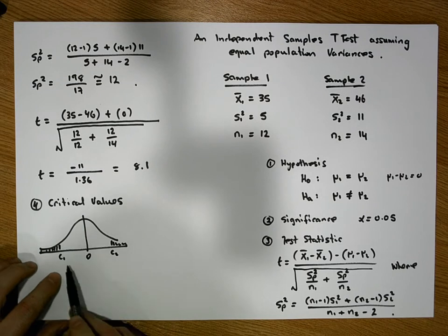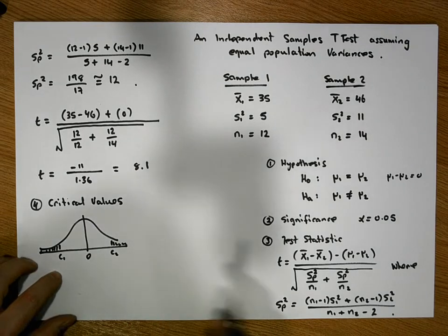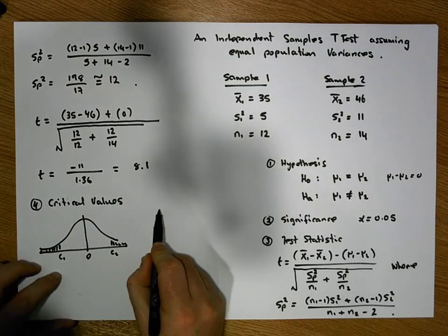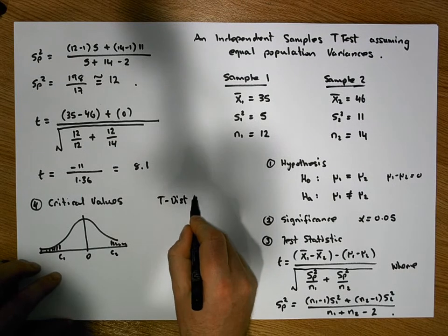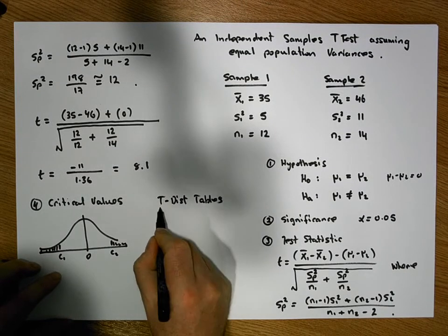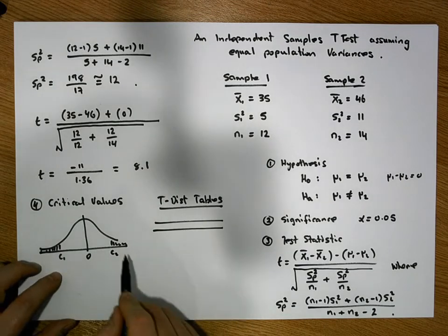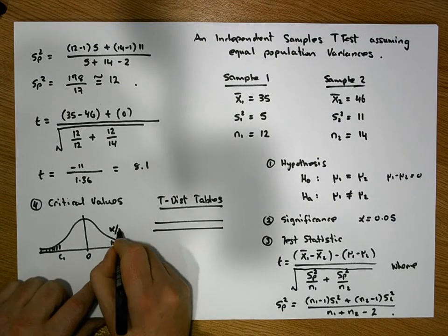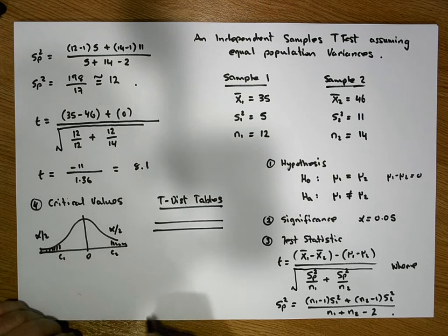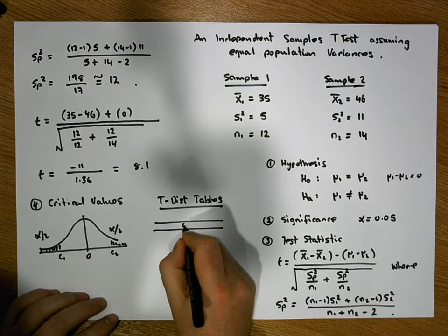So to figure out these particular critical values, what we need to do is we need to go to our t-distribution tables. The degrees of freedom, in this case, our t-distribution tables are going to be, so for our t-distribution tables, and we have the area in the right-hand tail. In our case, it's alpha over 2. So it's alpha over 2 in here and it's alpha over 2 in here, which is 0.025. So we're looking at 0.025.